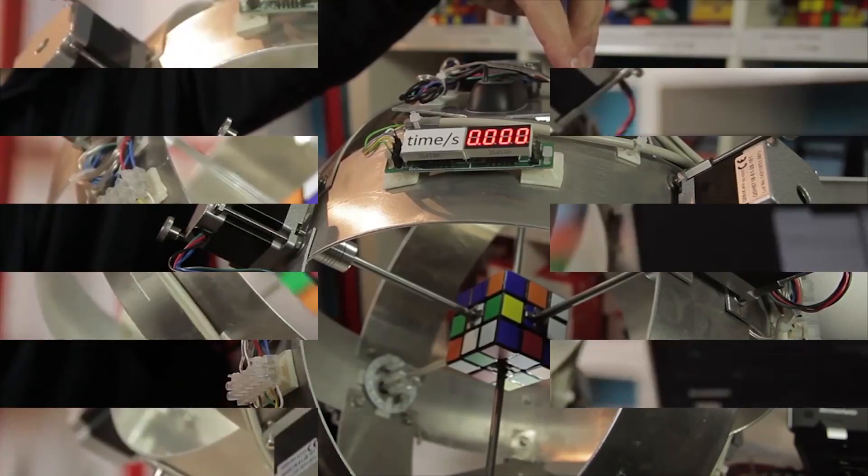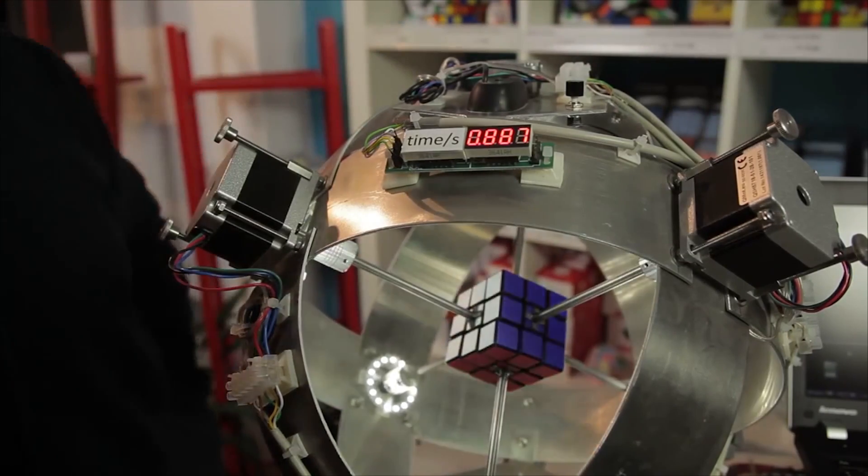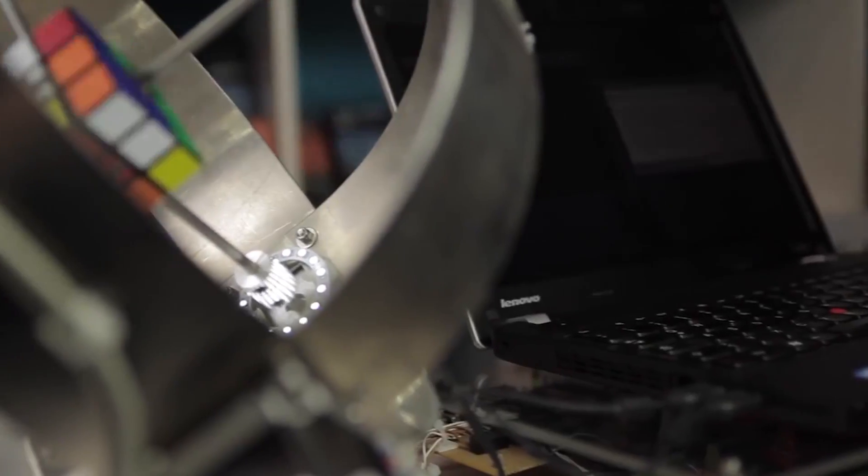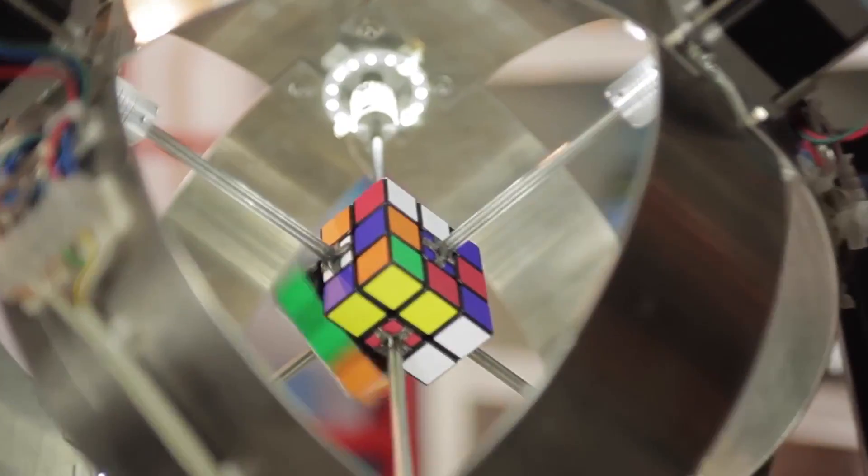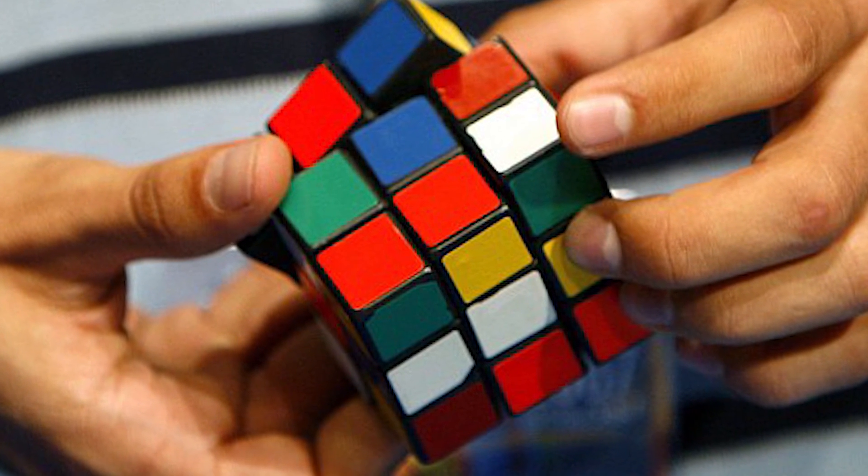Infineon first showcased Sub1's ability to quickly solve a Rubik's Cube puzzle at the electronica trade fair in Munich. As spectators watched, the robot solved the puzzle in 0.637 seconds, which is a new Guinness World Record. The fastest recorded time for a human solving the puzzle is 4.74 seconds.